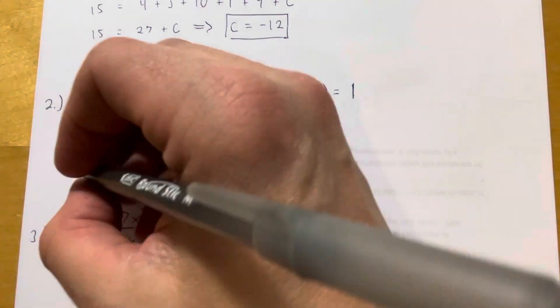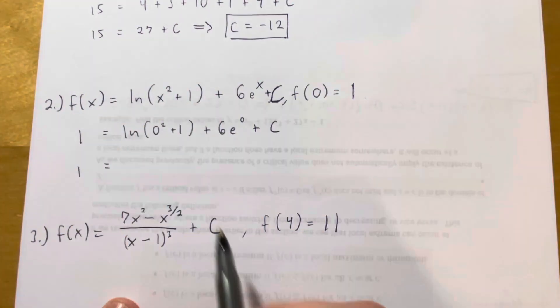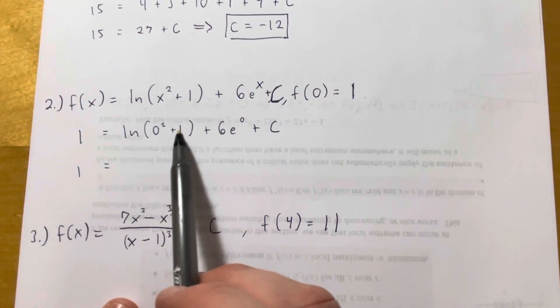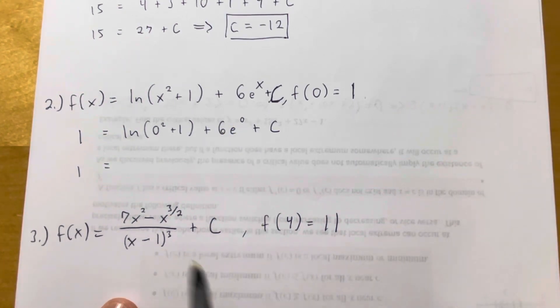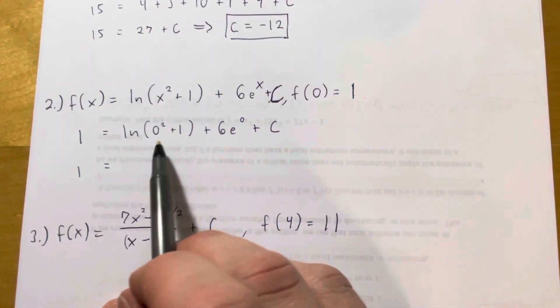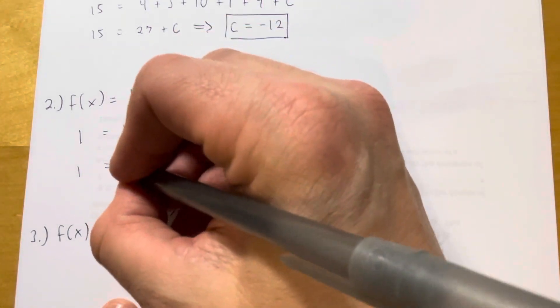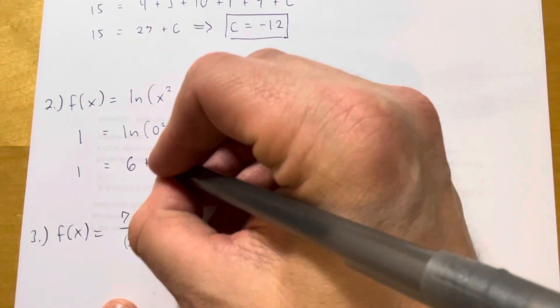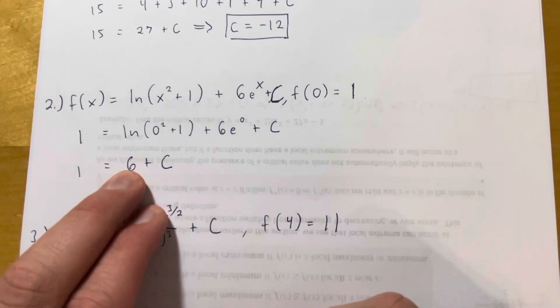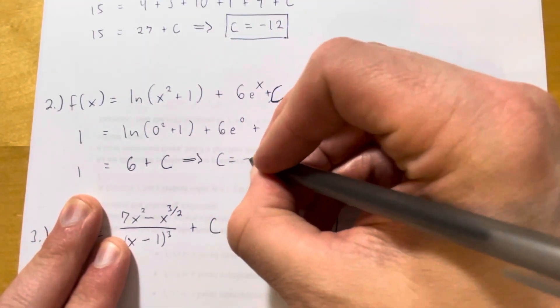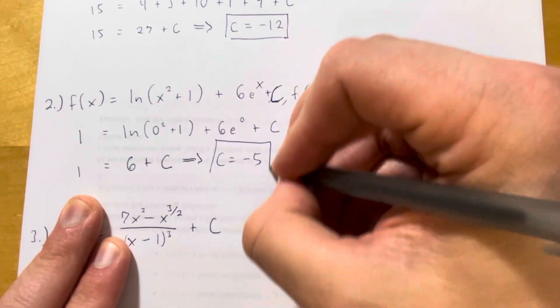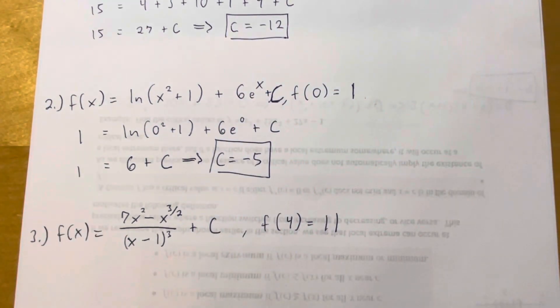So now I'm going to have 1 equals, this is the natural log of 1, which is 0. e to the power of 0 is 1 times 6, which would just be 6. So I have 0 plus 6, which is just 6, plus C. Now I can subtract 6 from both sides, and that gives me negative 5.